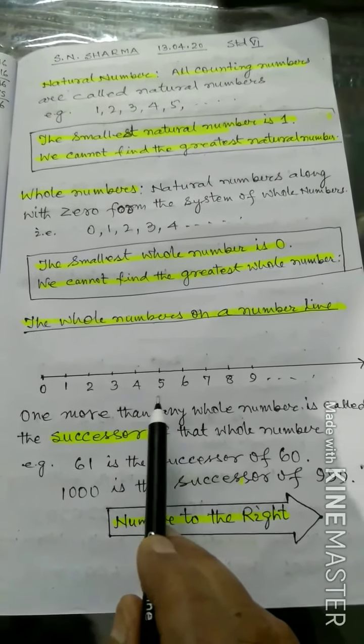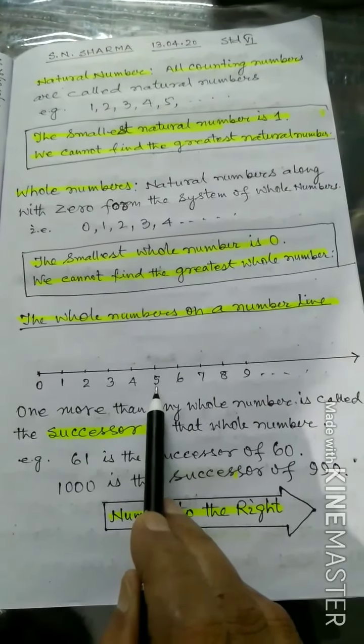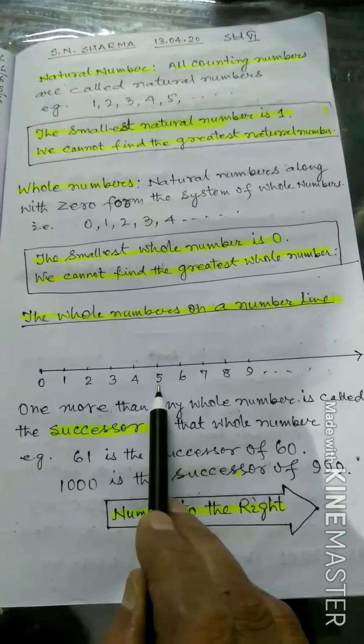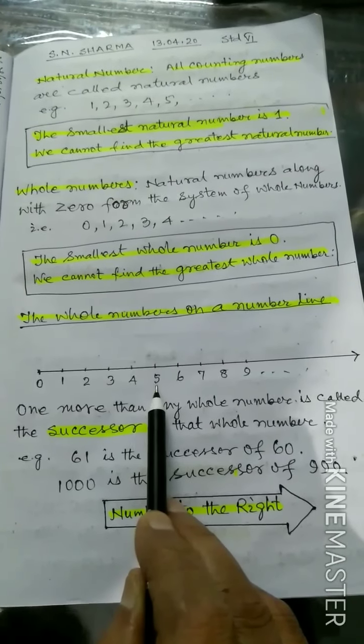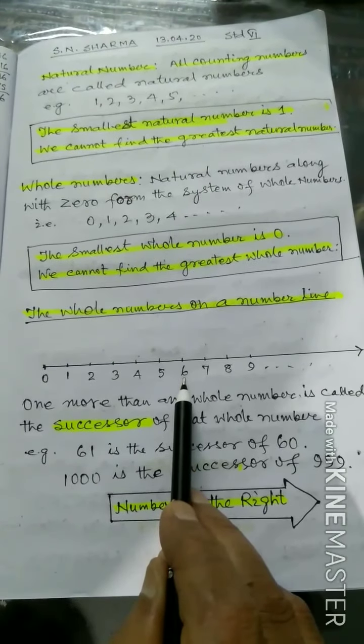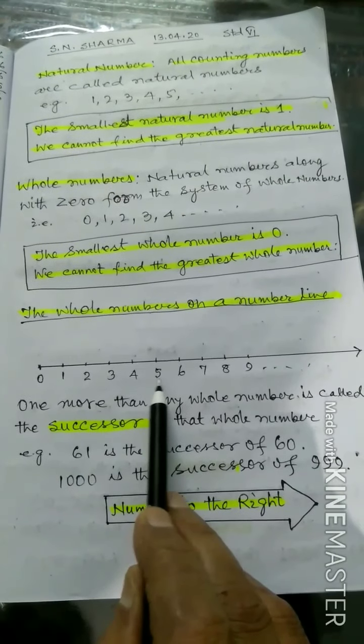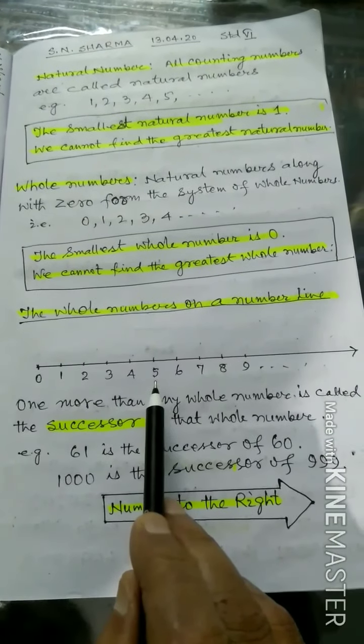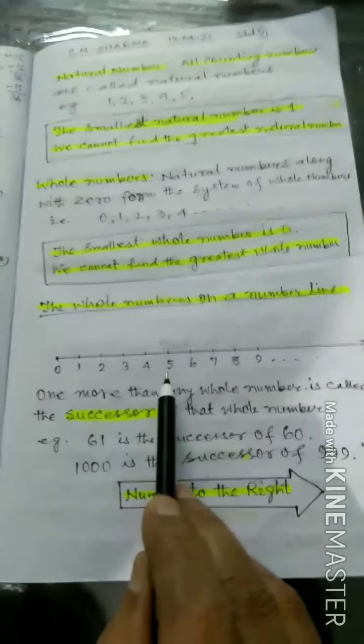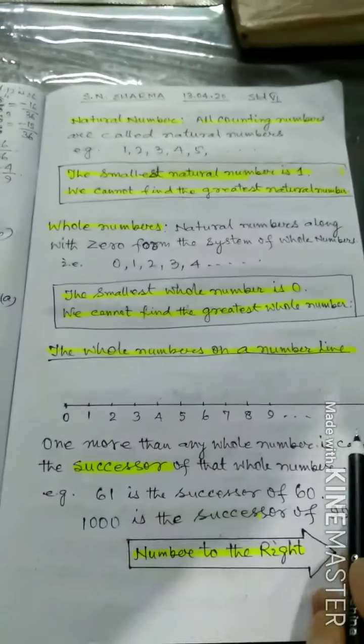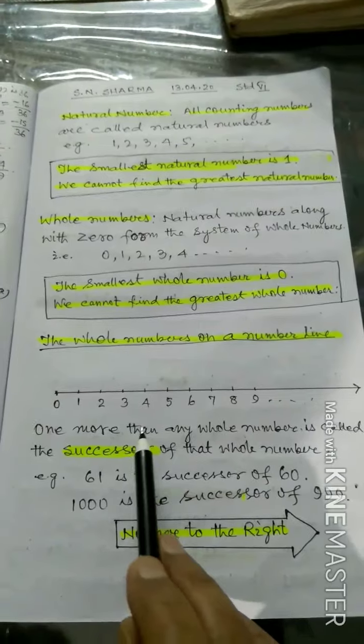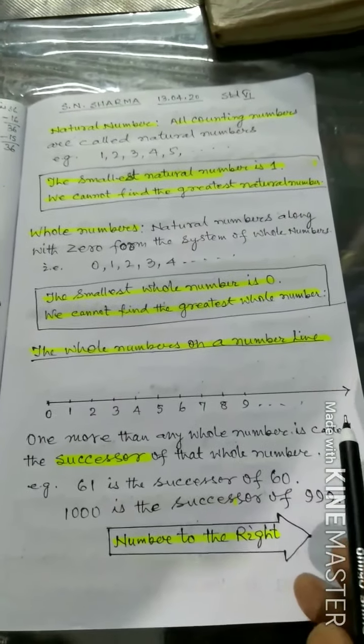Just any number, 5. The successor of 5 is 5 plus 1, that is 6. So on the number line, you reach left to right, left to just right.